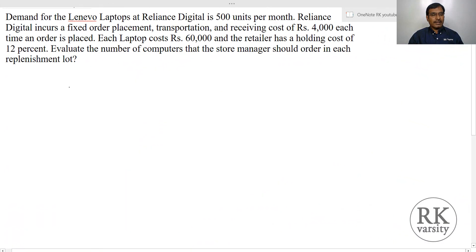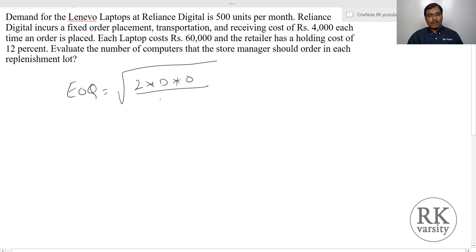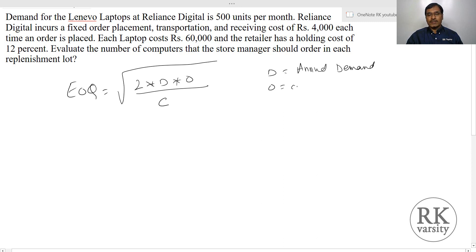Here is a scenario. To calculate your economic order quantity, you need to use the equation: square root of 2 into D into O upon C. Here D is annual demand — that is the number of units that you are going to consume during a particular year. And O is order cost — this is the cost that you incur per order.